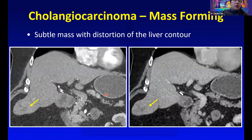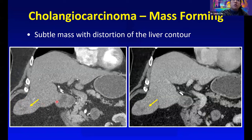This one is a rather subtle-looking mass, but we can appreciate the heterogeneously enhancing lesion deforming the liver contour. So if you see some extra bumps of the liver contour, look very closely at the texture to make sure that there's not a mass there.